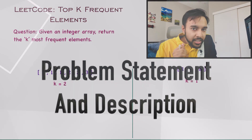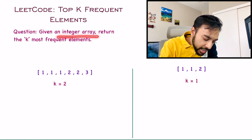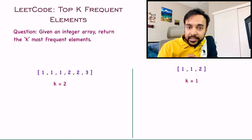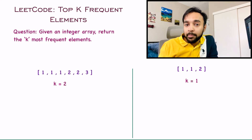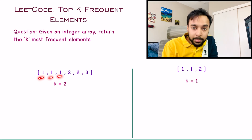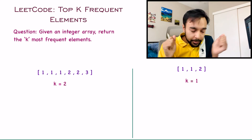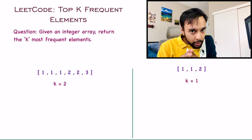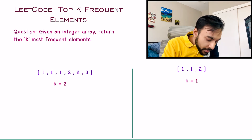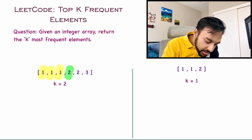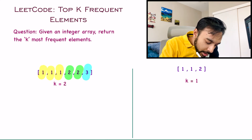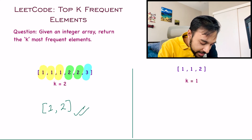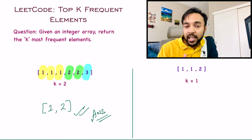Let us first make sure we are understanding the problem statement correctly. In this problem, you are given an integer array and you have to return the k most frequent elements. Looking at test case number one, I am given this integer array. This array could be in any order — it may be sorted or not — and it may have elements that are repeated, unique, or adjacent. You are given a value of k, so you have to tell me which are the two most frequent elements. You can see that one occurs three times, two occurs two times, and three occurs only one time. The most frequent element is one and the second most frequent is two, so this array will be your answer. You can return these elements in any order.